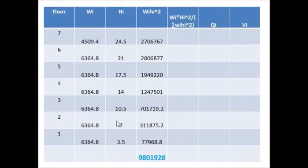Then for the third column, it is Hi—the story height from the base. So what is the seventh story height, which is the total height of the structure, which is 24.5? And when you go below for the sixth, fifth, fourth story, it will reduce by minus 3.5. For the next column, you just have to multiply Wi with the square of this particular height.